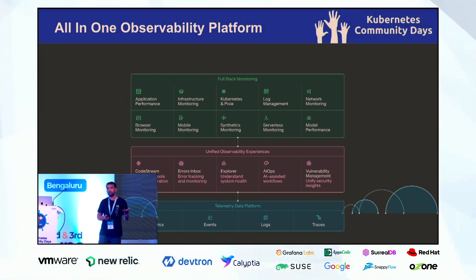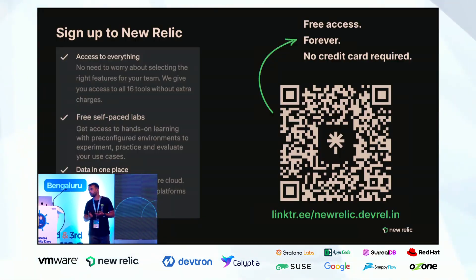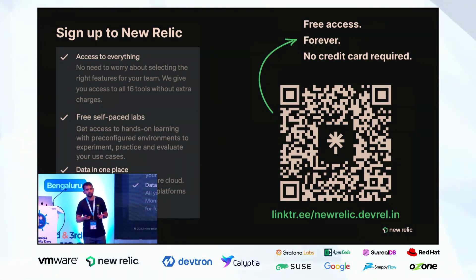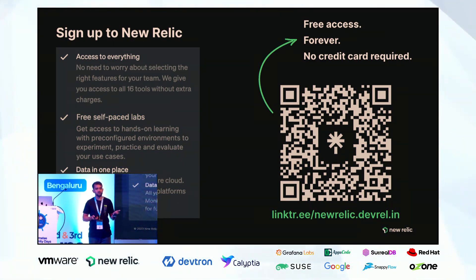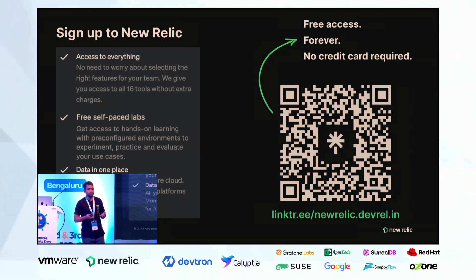You can start with 100 GB free per month if you want to just explore without any commitment. You can scan the QR code and start exploring New Relic for your personal projects as well as POC projects. It's 100 GB per month, free forever — you do not need to add any credit card details, and you can keep using that.